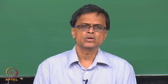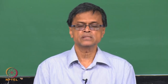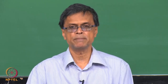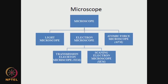We will continue on analytical tools for determining the properties of various biomaterials. We have been talking about microscopes — the light microscope, the electron microscope, and the atomic force microscope. There are 2 types of electron microscope: transmission electron microscope and scanning electron microscope. In the transmission electron microscope the electron beam passes through the sample, whereas in the scanning electron microscope it is reflected back.